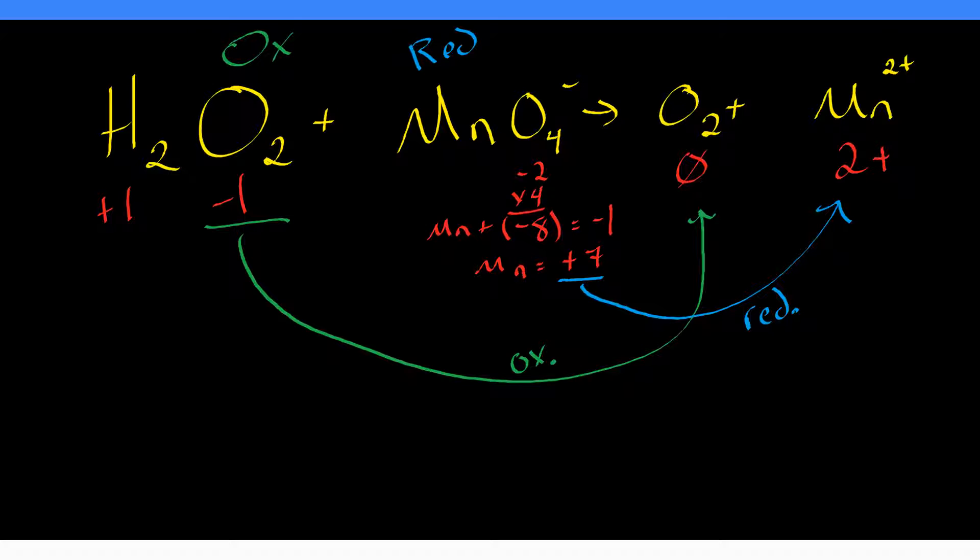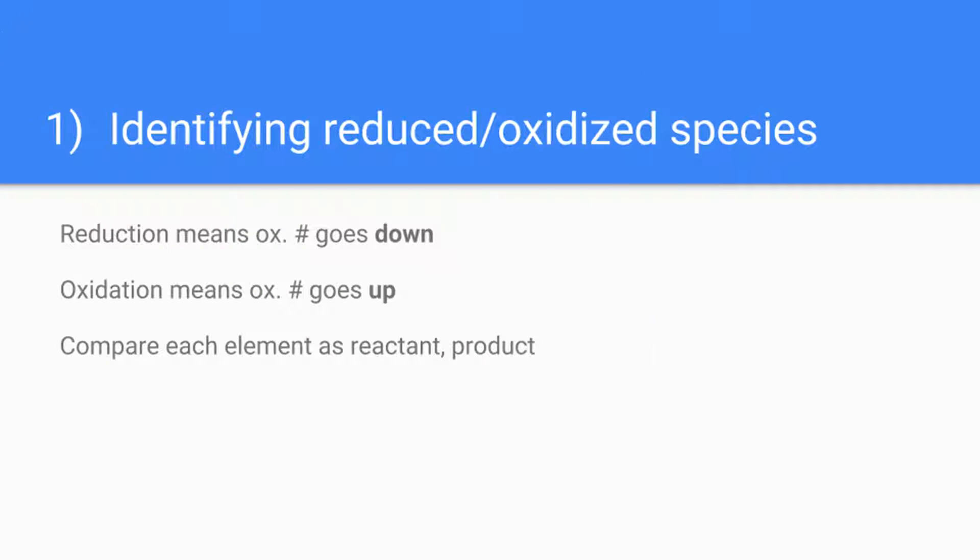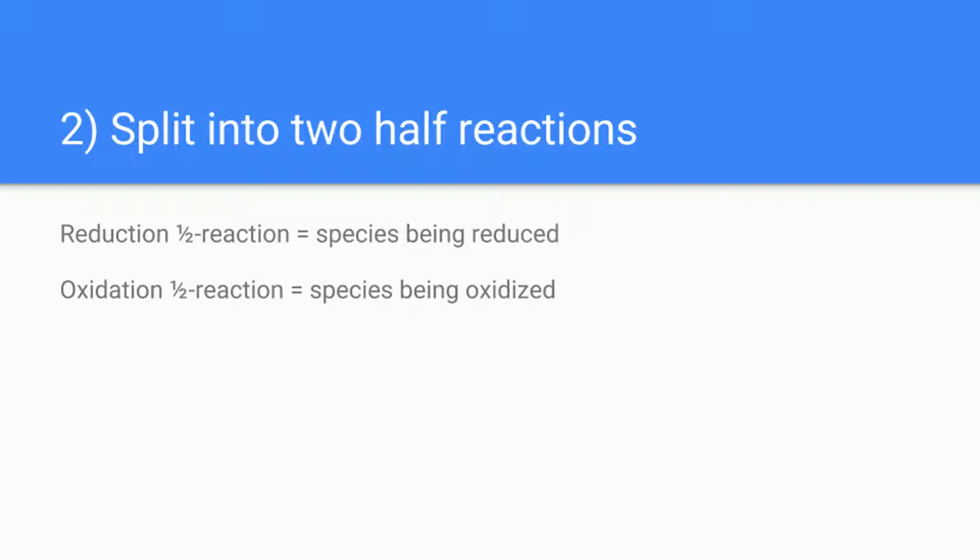Why not the oxygen in permanganate? For oxoanions, we're usually focusing on the element that's not oxygen. In this case it's the manganese, and in other examples it may be less straightforward but still manageable. So we have our two species — the oxidized and the reduced: the oxygen of peroxide and the manganese of the permanganate. Now let's move on to the next step in balancing redox reactions.